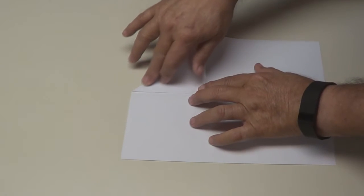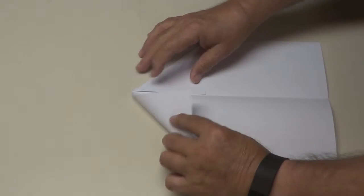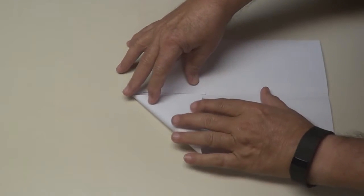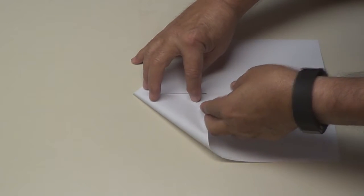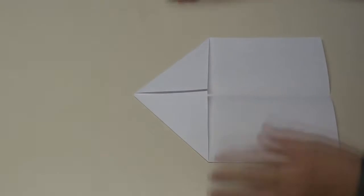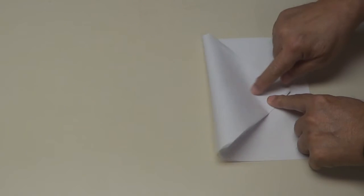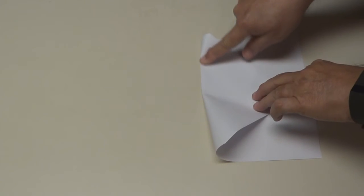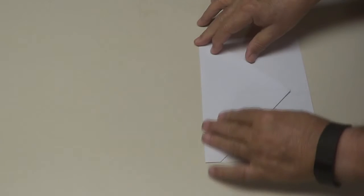Do the other side the same way. Make sure they're even right there. Crease it. Okay, now we want to fold this so the point goes to one inch from the bottom, right there on the center. There's your center line. Fold it down, crease it.